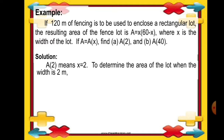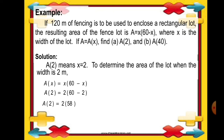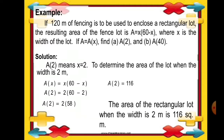Since A is equal to A of x, we have A of x is equal to x times the quantity of 60 minus x. We substitute x equals 2, so A of 2 is equal to 2 times the quantity of 60 minus 2. We subtract 2 from 60 to get 58, then multiply 2 times 58. So A of 2 is 116, meaning the area of the rectangular lot when the width is 2 meters is 116 square meters.